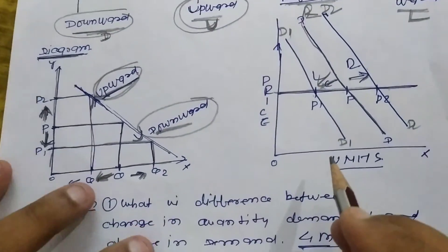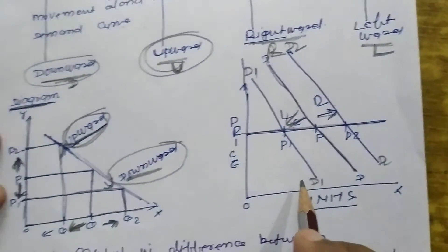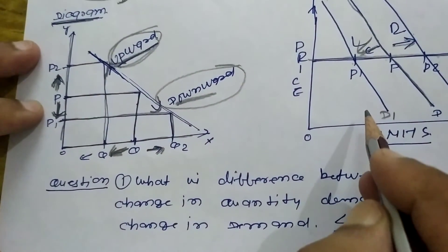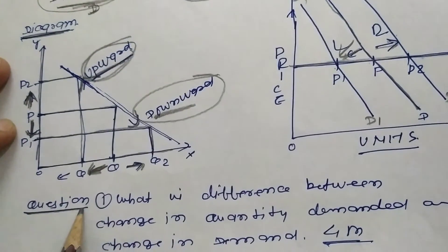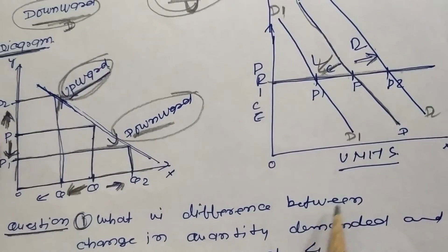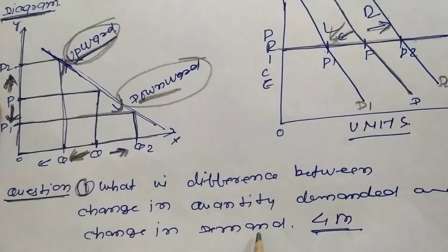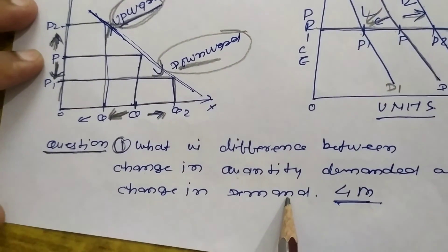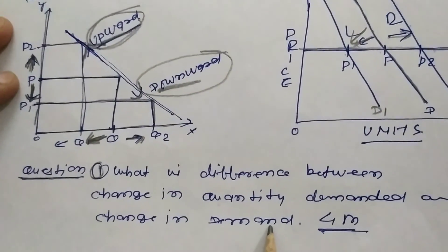Now dear students, we have six questions based on this and we will discuss them one by one. Today you will write down the difference for question number one: what is the difference between change in quantity demanded and change in demand, with the help of this flowchart or the book. That's all for today. Thank you.